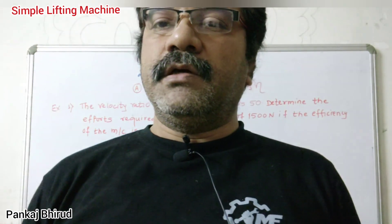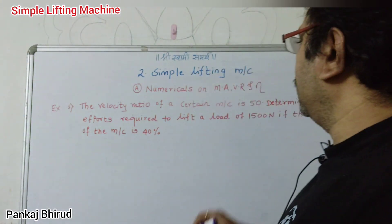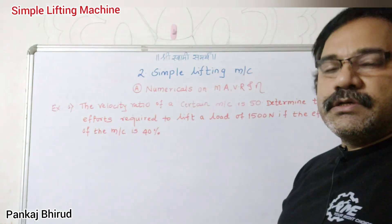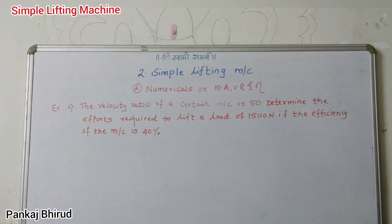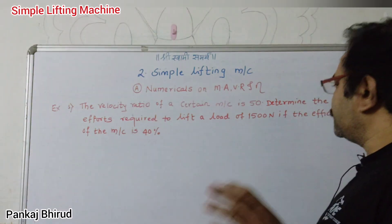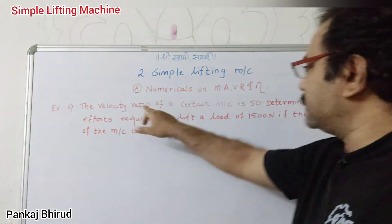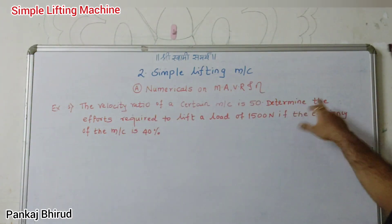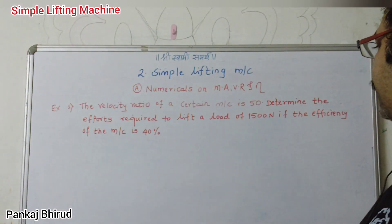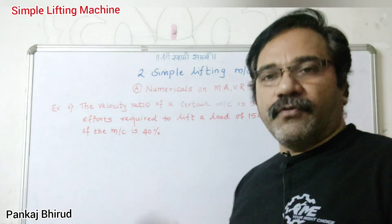So let us take the numericals on MA, VR, and efficiency. Here we have taken one example: the velocity ratio of a certain machine is 50. Determine the effort required to lift a load of 1500 Newton, if the efficiency of the machine is 40%.